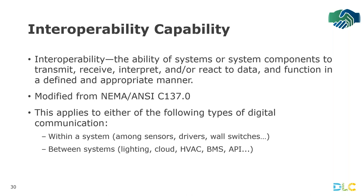For our definition of interoperability, we're describing it as the ability of systems or system components to transmit, receive, interpret, and/or react to data and function in a defined and appropriate manner — modified slightly from NEMA's version from the C137 committee. This applies to either of the following types of digital communication: within a system, among sensors, drivers, and wall switches within one system; or between systems — between two different lighting systems, or lighting and HVAC, lighting and BMS, etc.